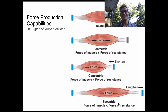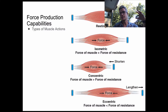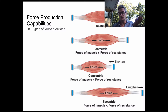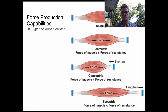Eccentric is when you go to set down the vehicle again. The muscles will get long. There's still some force being applied, but the force of the resistance — the car — is much heavier than what the muscles are doing at that time, so you slowly lower the vehicle. So again: isometric, concentric, and eccentric contractions.